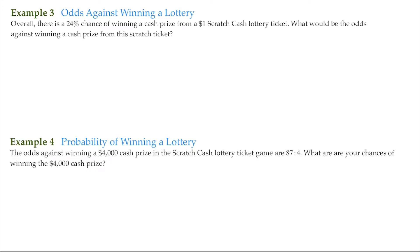Sometimes we're told the chances of winning something like a lottery or raffle, but we'd like to know the payout if we win. For this first example, overall there's a 24% chance of winning a cash prize from a $1 scratch lottery ticket. What would be the odds against winning a cash prize from this scratch ticket?